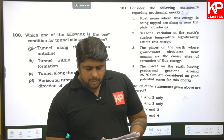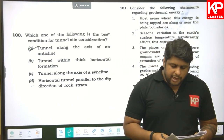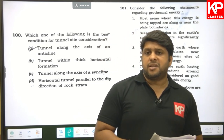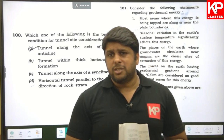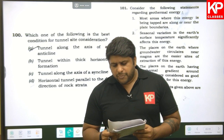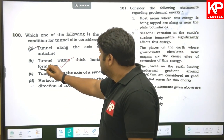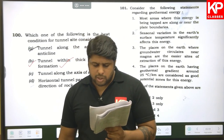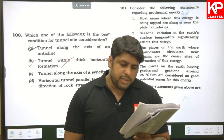Question one hundred and one: which is the best condition for a tunnel site? Tunnel along the axis of the anticlinal line — an anticline is the strongest portion and cannot be excavated easily. Tunnel with thick horizontal formations is the right answer, so B is correct.